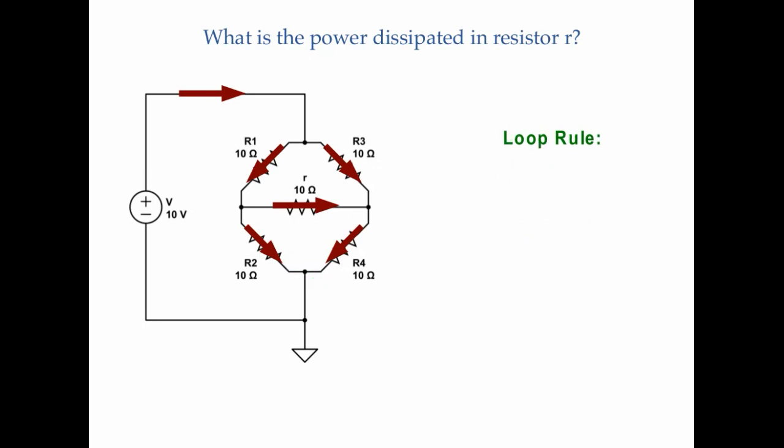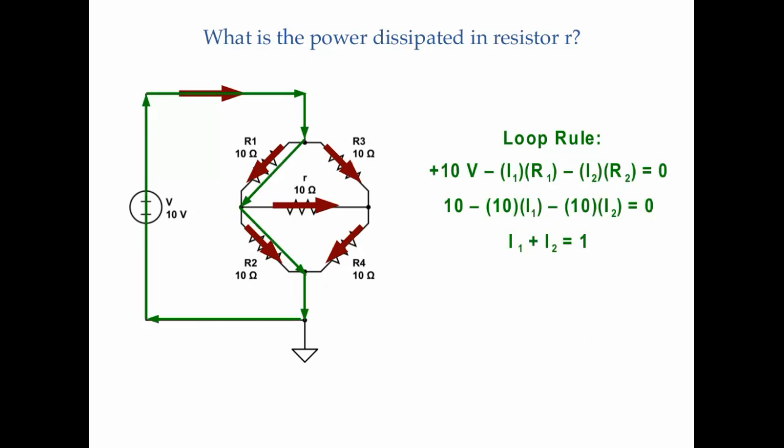Now for the loop rule. Drawing a loop on the outside of the circuit and through the left side of the Wheatstone bridge, I get: plus 10 going through the battery, minus I1·R1, minus I2·R2 equals zero. Substituting in R1 and R2 and simplifying gives the first loop equation. On the other side of the bridge: plus 10, minus I3·R3, minus I4·R4 equals zero. Plugging in R3 and R4 and simplifying gives the second loop equation.